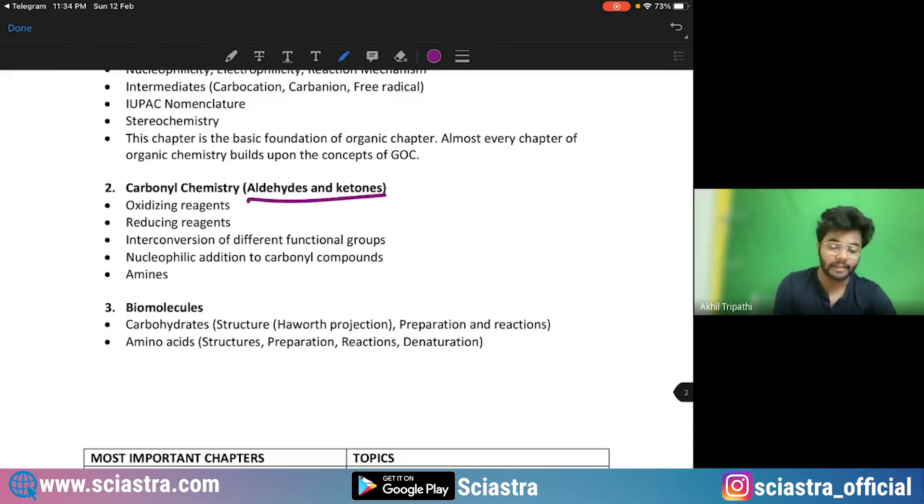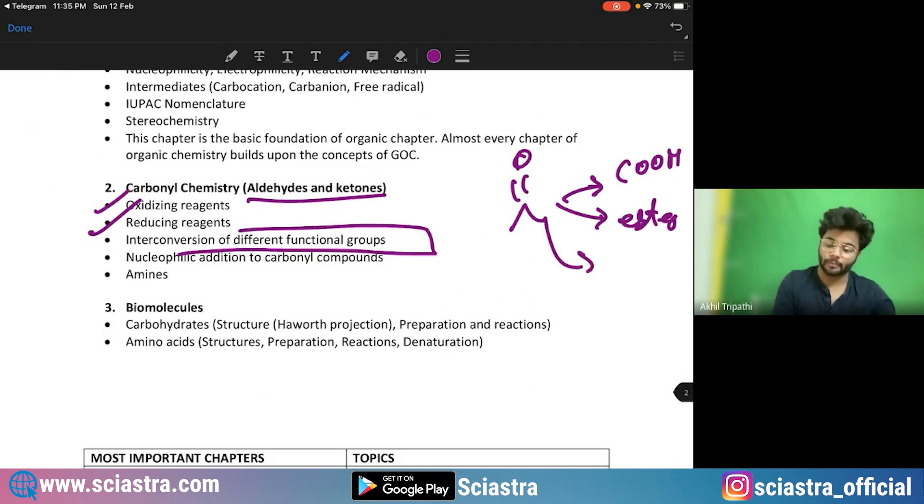Carbonyl chemistry. So here aldehydes and ketone, oxidizing and reducing agents, interconversion of different functional groups, carbonyl to let's say carboxylic acid or ester or acyl group or amide group and all those things. This is very important. Then nucleophilic addition to carbonyl compound. This is very important topic. And finally amines.